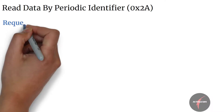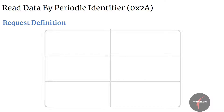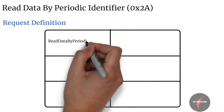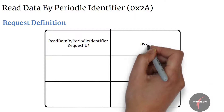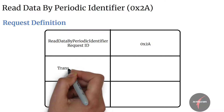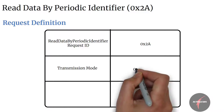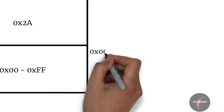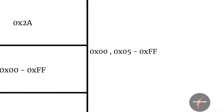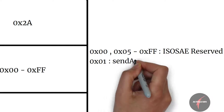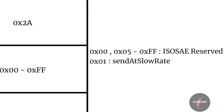Let's dive into the request definition of the service. First, we have the Read Data by Periodic Identifier request SID, which maps to value 0x2A, followed by the transmission mode parameter, which can take values from 0x00 to 0xFF. Values 0x00 and 0x05 to 0xFF are reserved by ISO/SAE. Value 0x01 indicates 'send at low rate' — sending this value in the request configures the server to transmit the requested data at a slow rate, as defined by the vehicle manufacturer.